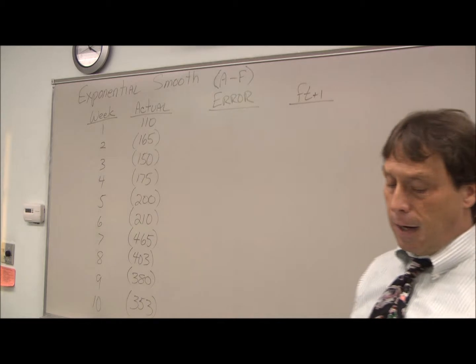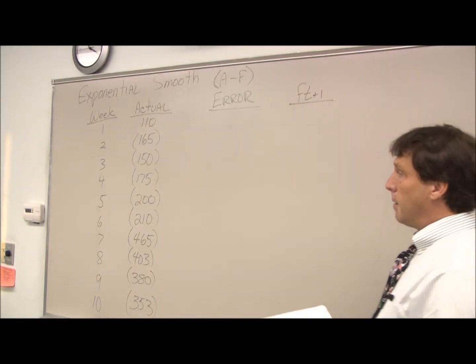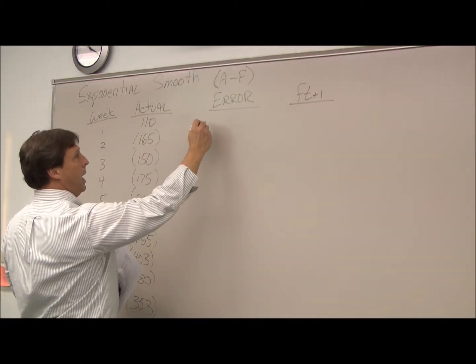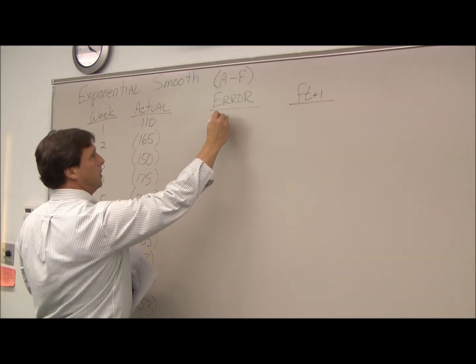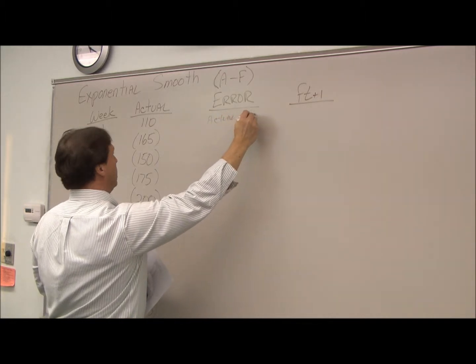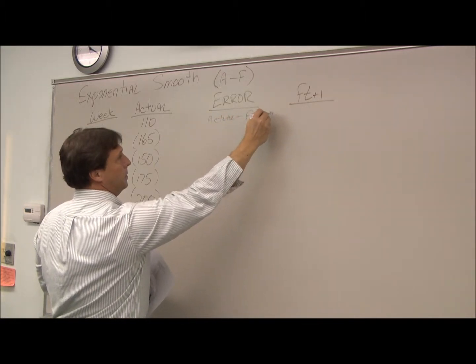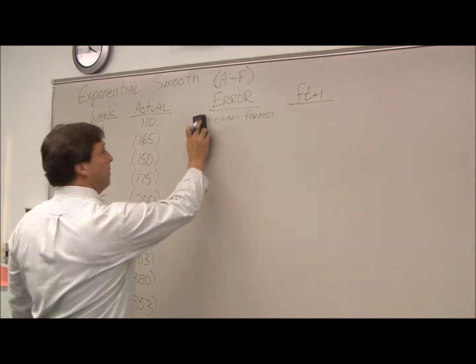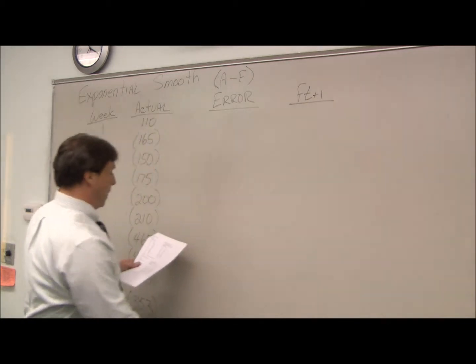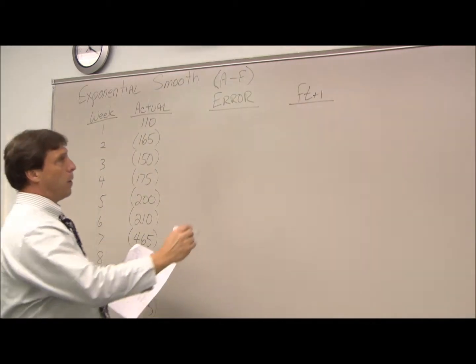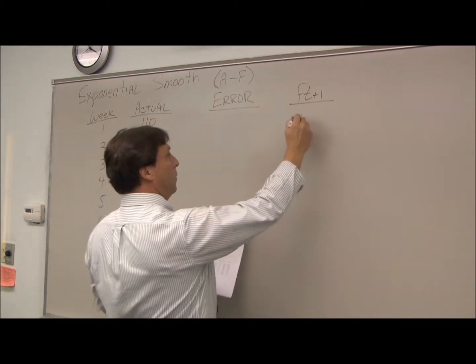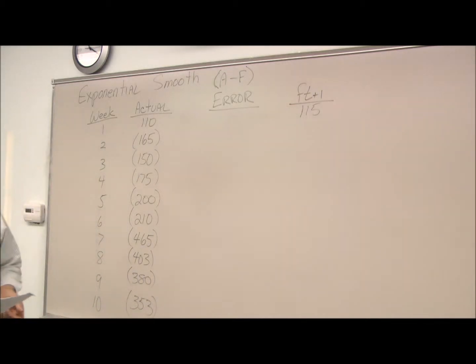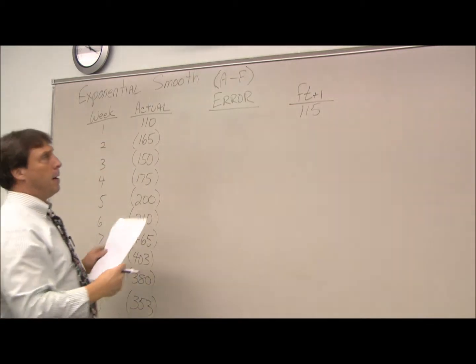All right, the first thing we need to do is calculate error. Error is simply the actual minus the forecasted, or A minus F. So with the first month, what I'm going to do is put in a forecast of 115, so my error is simply 110 minus 115, which is negative 5.